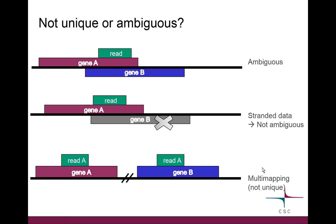It's a bit confusing because we talk about 'not unique' and 'ambiguous' — what's the difference? The first situation is when a read mapping place is ambiguous. It's ambiguous because the read, shown in green, maps to a place in the genome which has two genes: gene A (purple) and gene B (blue), and it perfectly overlaps both. So the situation is ambiguous — we cannot say which gene it comes from, unless the data was made with a stranded protocol. If the two genes are on different DNA strands, then we can discriminate and count it for one of them.